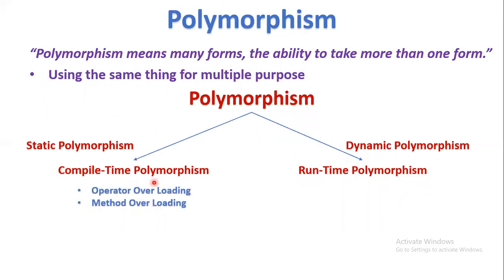Operator overloading and method overloading are examples of compile-time polymorphism. Operator overloading means using a single operator for multiple purposes. For example, the plus operator between two numerical values acts as arithmetic addition, but the same plus operator between two strings acts as concatenation — that is operator overloading. Method overloading means more than one method having the same name but different implementations. Both operator overloading and method overloading happen at compile time, so they are examples of compile-time polymorphism.